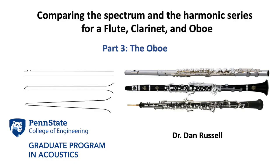Thanks for watching. If you liked this one, check out the other two parts of the series. In part one, I take a look at a flute, which is an open-open cylinder and plays all of the harmonics with an emphasis on the fundamental. In part two, I take a look at a clarinet, which is a closed-open cylinder and has only the odd-numbered harmonics.